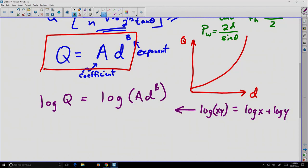And if we put that in here, we can rewrite this equation. Log Q is equal to the log of d to the b plus the log of A. Notice I've swapped the A and the d to the b in this case, which will be evident why in just a moment.